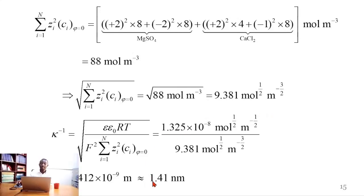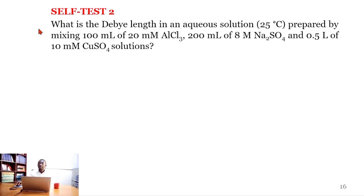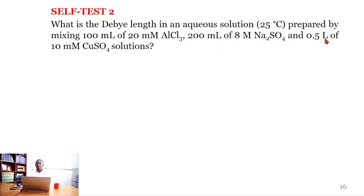Our second self-test question says: what is the Debye length in an aqueous solution at 25°C, prepared by mixing 100 mL of 20 mM aluminium chloride, 200 mL of 8 mM sodium sulfate, and 0.5 L of 10 mM copper sulfate solution? The answer is approximately 1 Å.